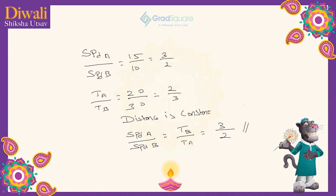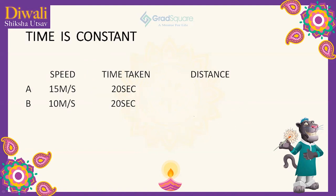I hope this is clear. Let us get into the next concept. Now let us learn what happens when time is constant between two people. Let us take the same people A and B — they are traveling at a speed of 15 meters per second and 10 meters per second respectively. They are traveling for a duration of 20 seconds. So the distance covered by A is nothing but 15 into 20, which is 300 meters.